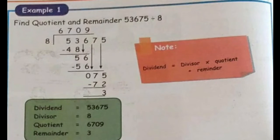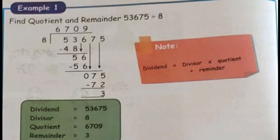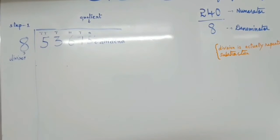Let's do the example sum page number 46. Find quotient and remainder 53,675 divided by 8. We ask how many 8's will make 5? The answer is none because our first digit is lesser than the divisor.